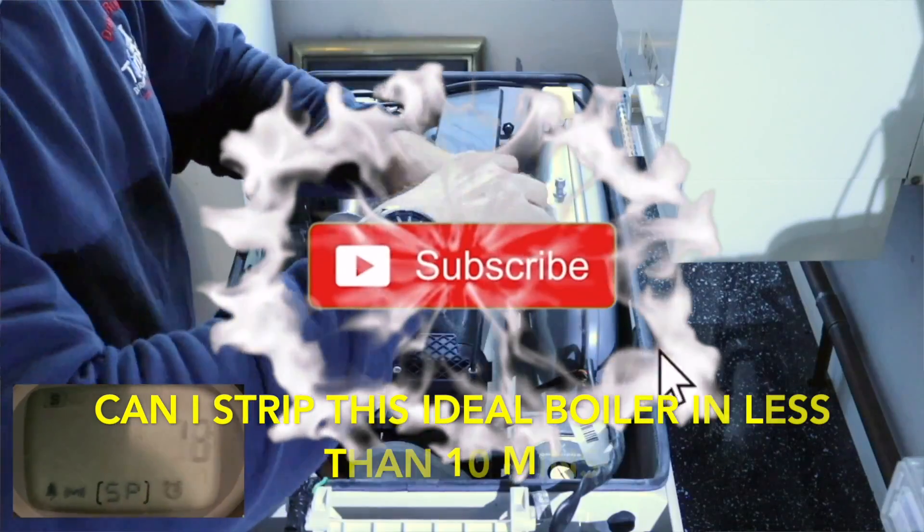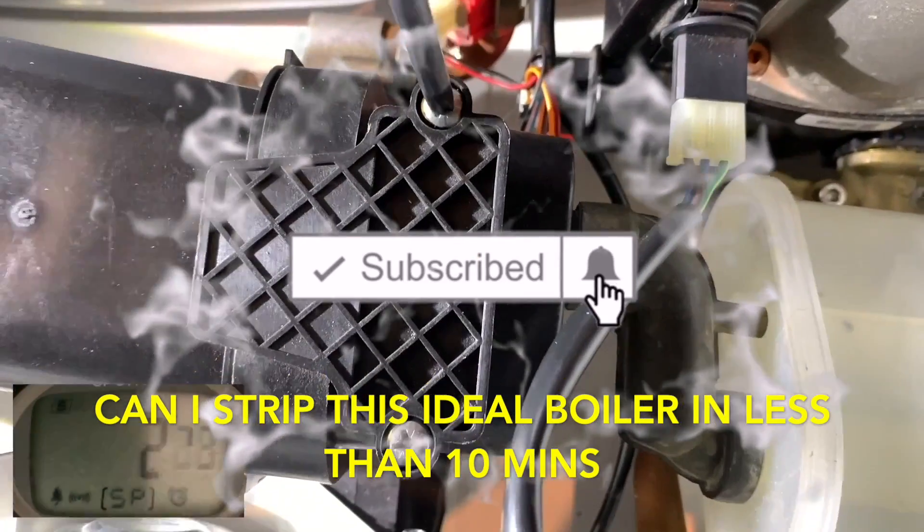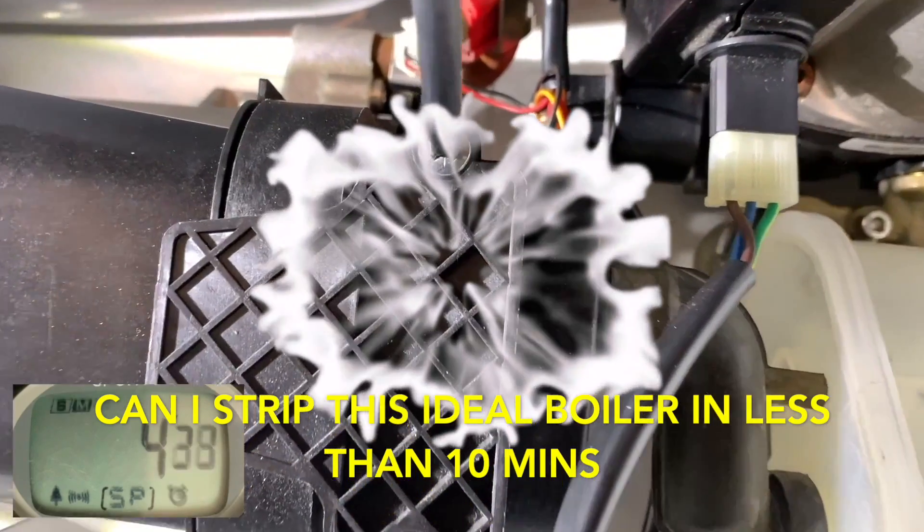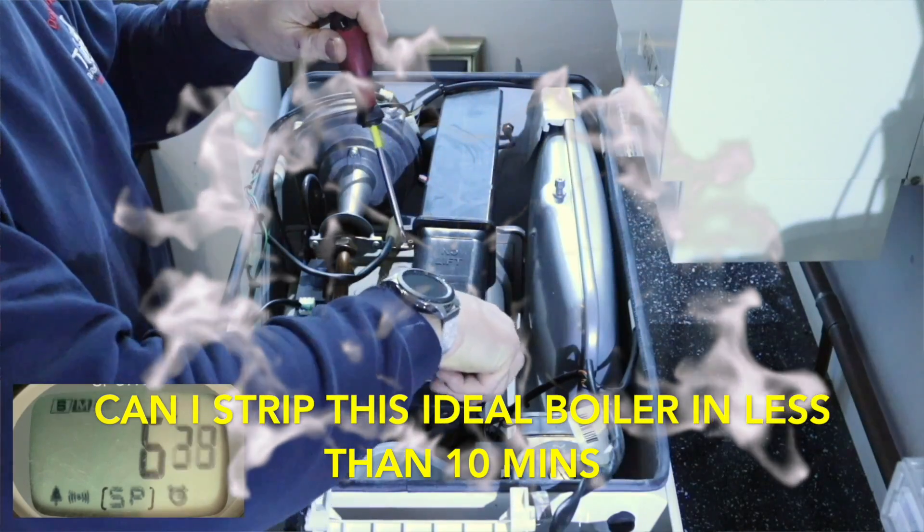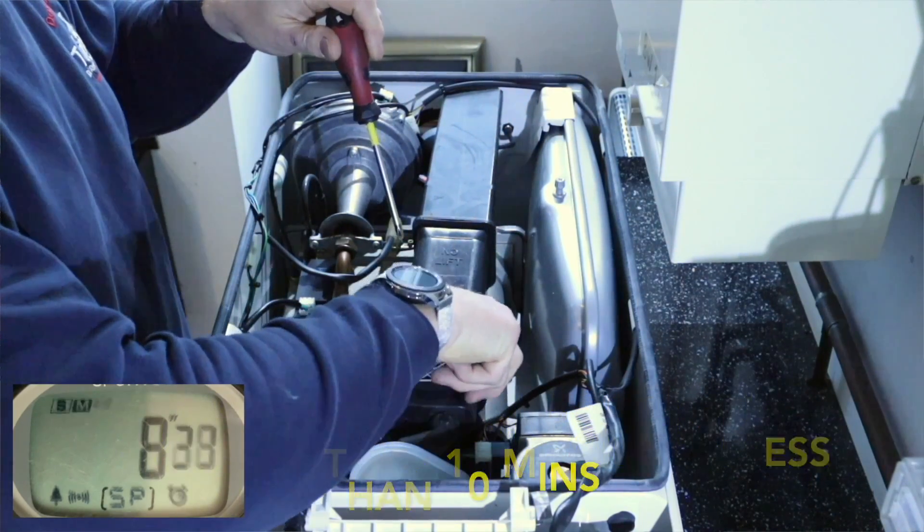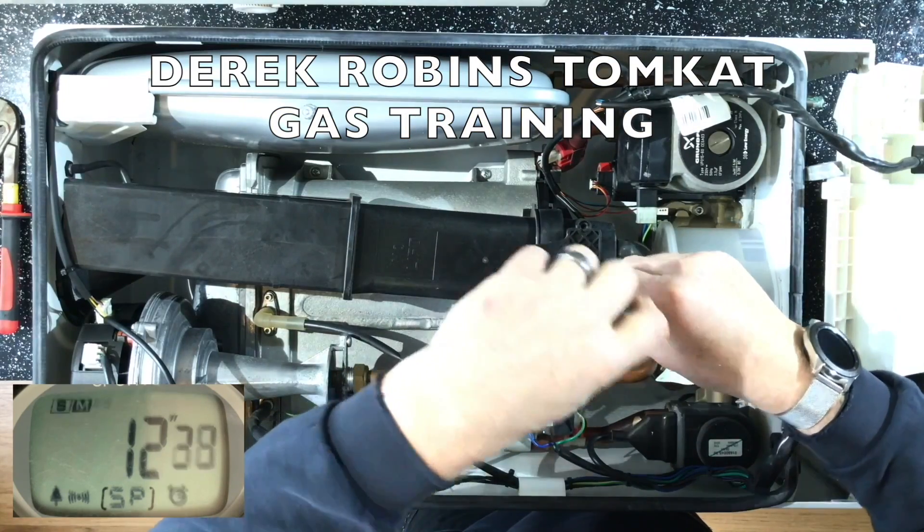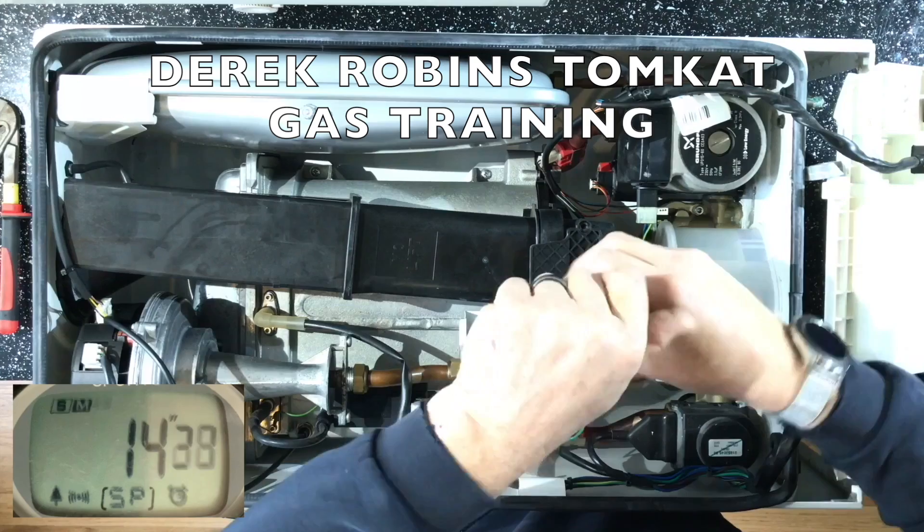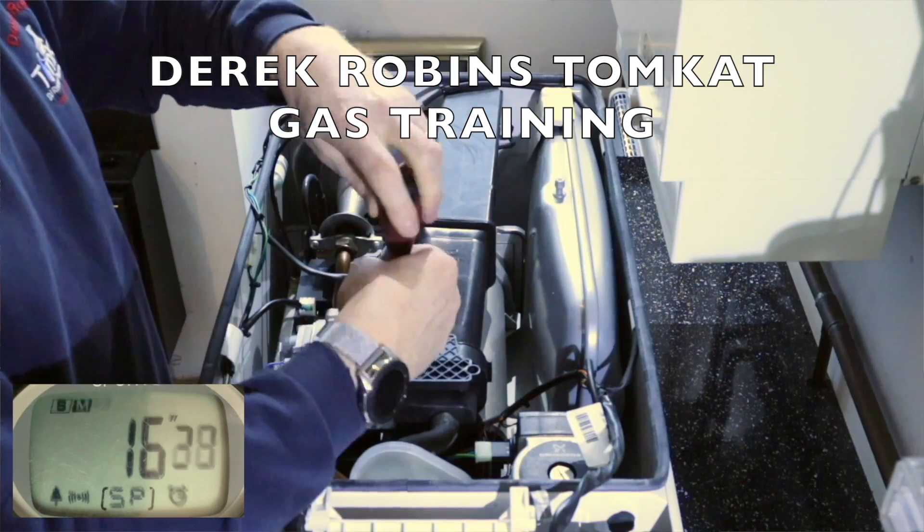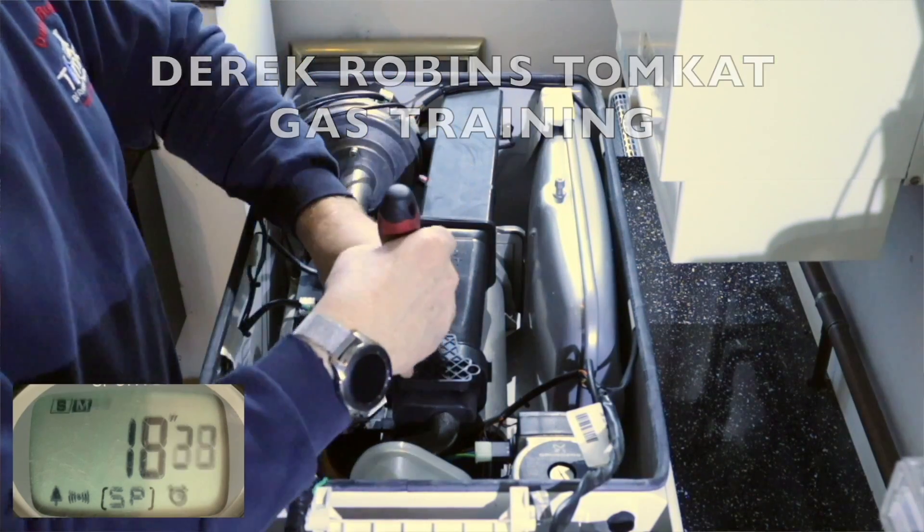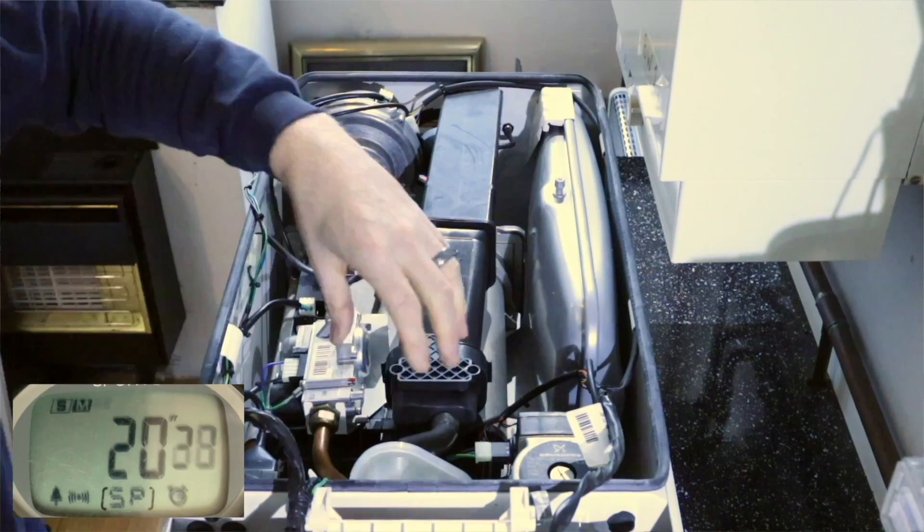Now the first thing I'm removing are these two screws, and these two screws hold the sump cover on. The sump cover allows you access into the sump when you come to service, but it also holds the flue manifold which connects the sump to the turret in position. You have to remove this cover when you want to remove the flue manifold.